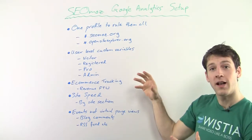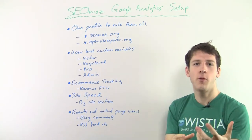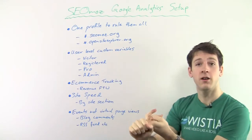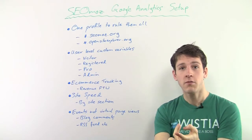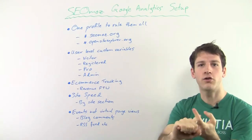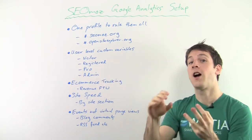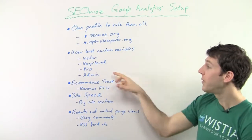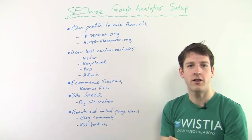The next thing I've got set up at SEOmoz is user-level custom variables. On SEOmoz, there are four basic states that you can have. You can be a visitor — not logged in, we don't have any information about you. You can be registered with the site, so you can leave a blog comment and you're signed up, but you're not paying us money. Or you can be a pro member, so you have access to all the pro features and you're a fully paid customer. Or you can be an admin — people like me, staff, and bloggers who have advanced privileges.